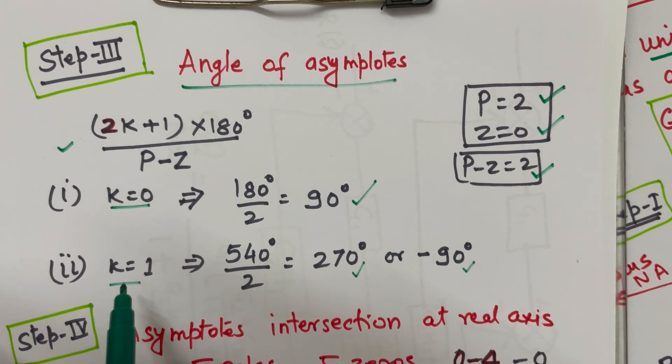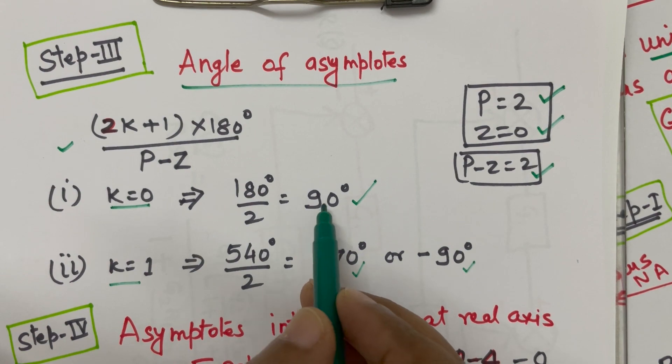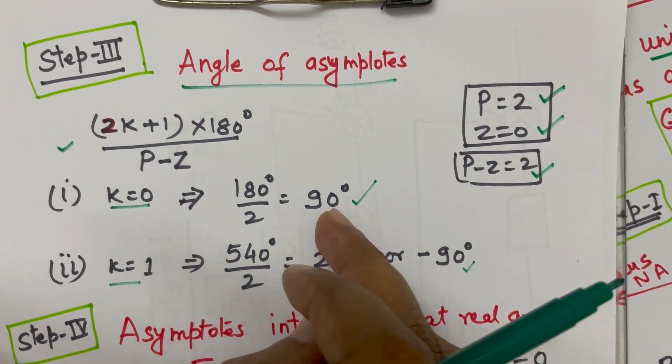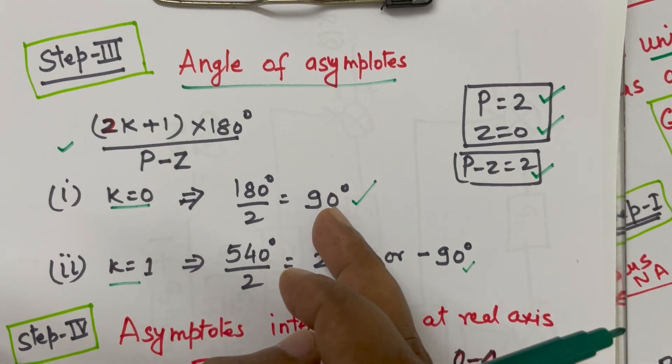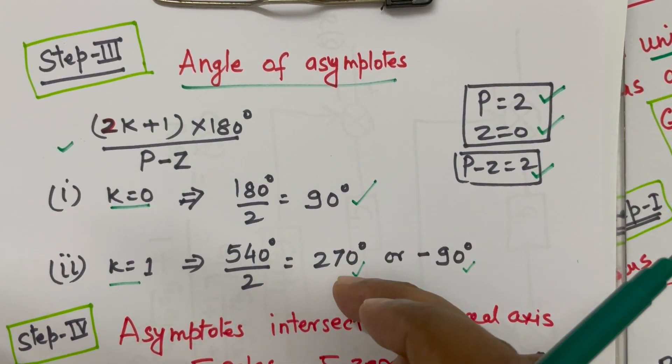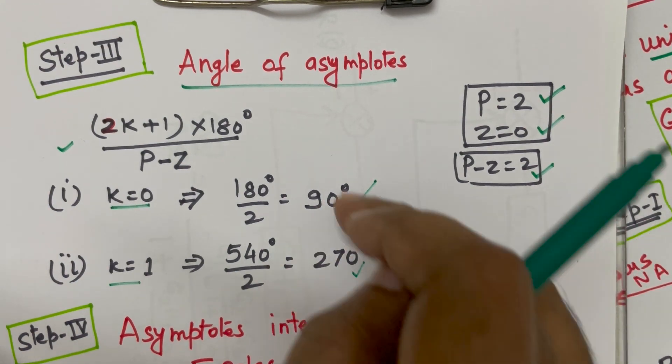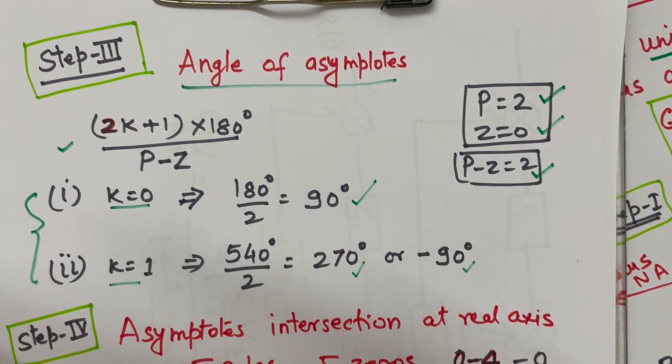But if you put further k, suppose you are putting k equal to 2, again you will be getting 90 degree only. It will be 90 plus 360. So, basically it represents the same angle that is 450 degree which represents same angle. Keep on adding, you will be getting only these two angles again and again. So, there will be only two asymptote in this.